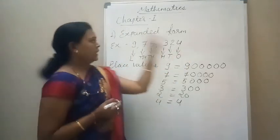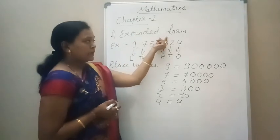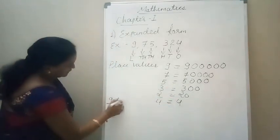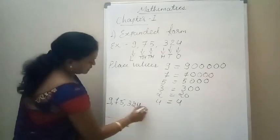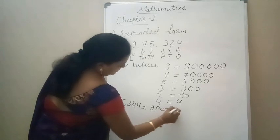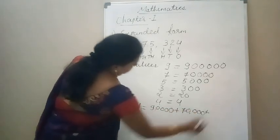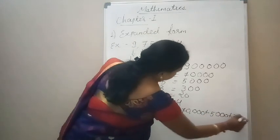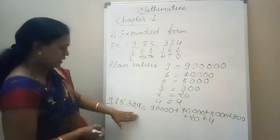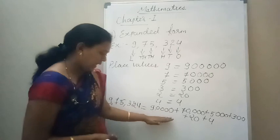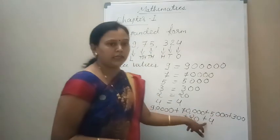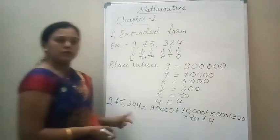Now, the expanded form. Expanded form means the sum of the place value of each digit. So, we will write down the expanded form: 9,75,324 is equal to 9,00,000 plus 70,000 plus 5,000 plus 300 plus 20 plus 4. This is the expanded form of the number. The meaning of expand means it is an increased form.